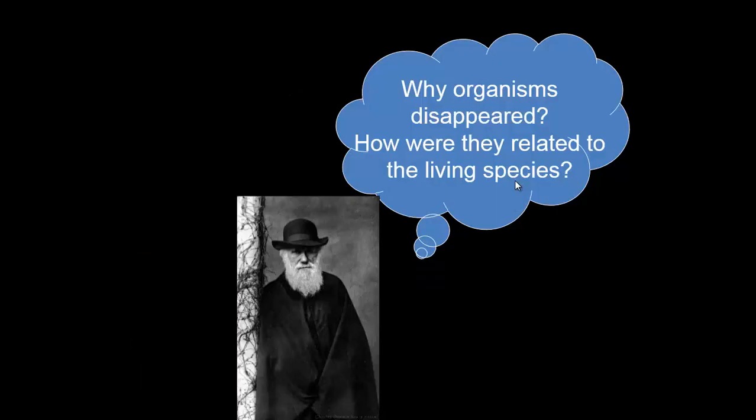At this time Darwin was also starting to realize the Earth might be much older than previously thought. So here's his question: why did organisms disappear — why did things become extinct? And how were they related to the living species? In Darwin's time, everything on Earth was considered static, meaning it had always been there the way he saw it. But he's starting to question this logic because the evidence conflicts with what he previously knew. That's a great example of the nature of science and how important it is to change your ideas based on new evidence.